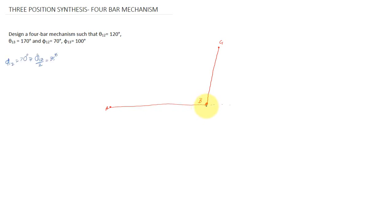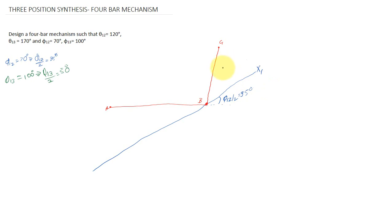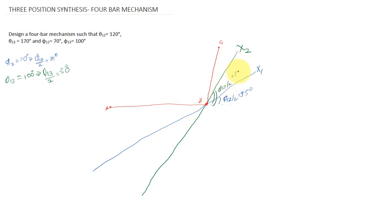Next, I am going to mark the line x1, which is at an angle of φ12/2 = 35°. Then I mark the line x2 at an angle of φ13/2, which is equal to 50°.